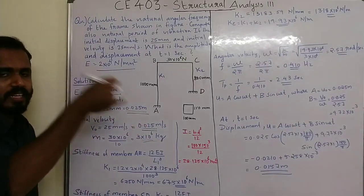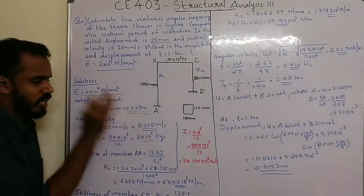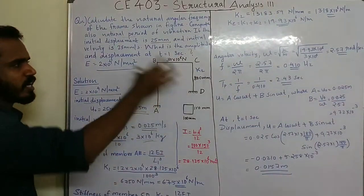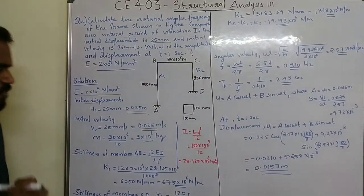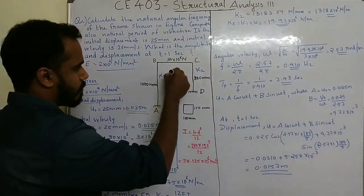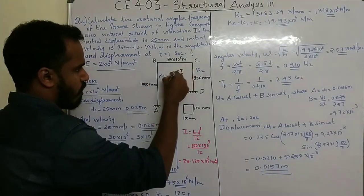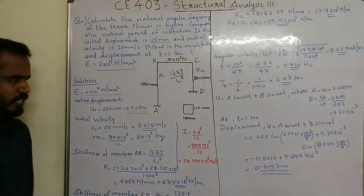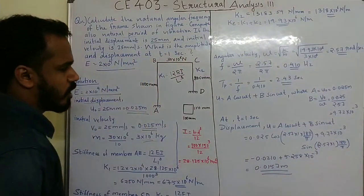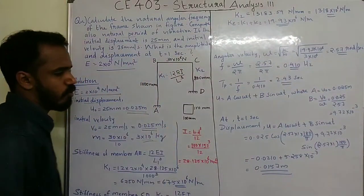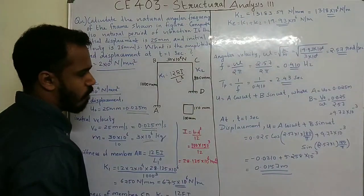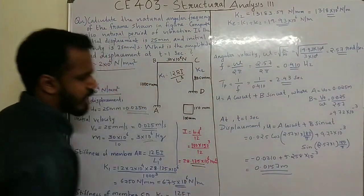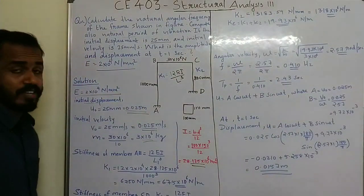Weight divided by g gives mass as 3 into 10 raised to 6 kg. The stiffness expression for a member is 12EI by L cubed. The moment of inertia I is equal to BD³ by 12, giving I equal to 28.125 into 10 raised to 6 mm⁴.